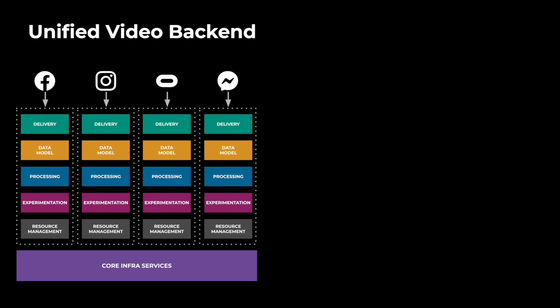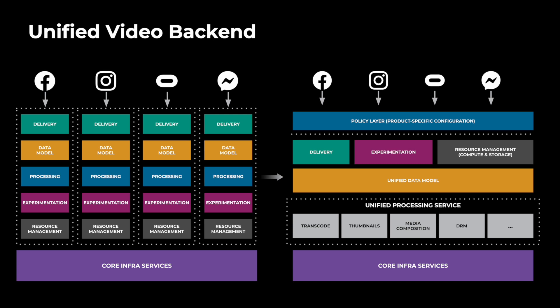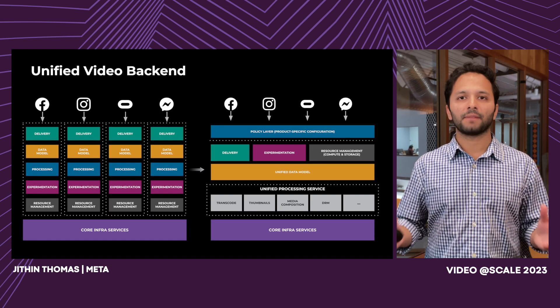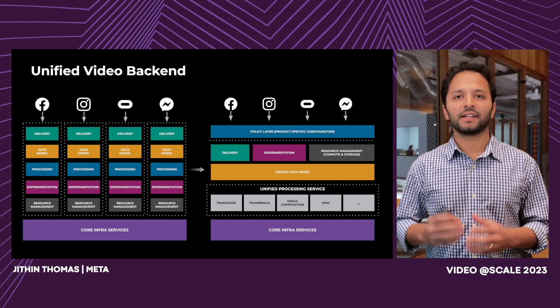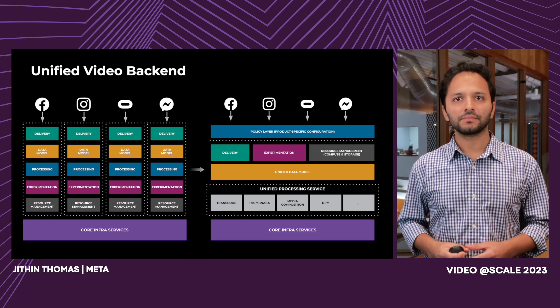On the left-hand side, you can see a diagram of what we had previously — app-specific silos which replicated functions across them, roughly including processing, delivery, experimentation, resource management, and data modeling. We replaced these vertical stacks with horizontal services that could be shared by apps all across Meta. At the bottom you'll see the unified processing service, which exposes functions such as transcoding or compression, media composition or server-side editing, thumbnail extraction, encryption for DRM, and a host of other functions. The outputs of this processing service are stored in a unified data model schema. Above this, we've built higher-level services such as delivery, experimentation, and resource management that can be shared by all apps. Different apps plug into these shared services by specifying their policies as configurations.